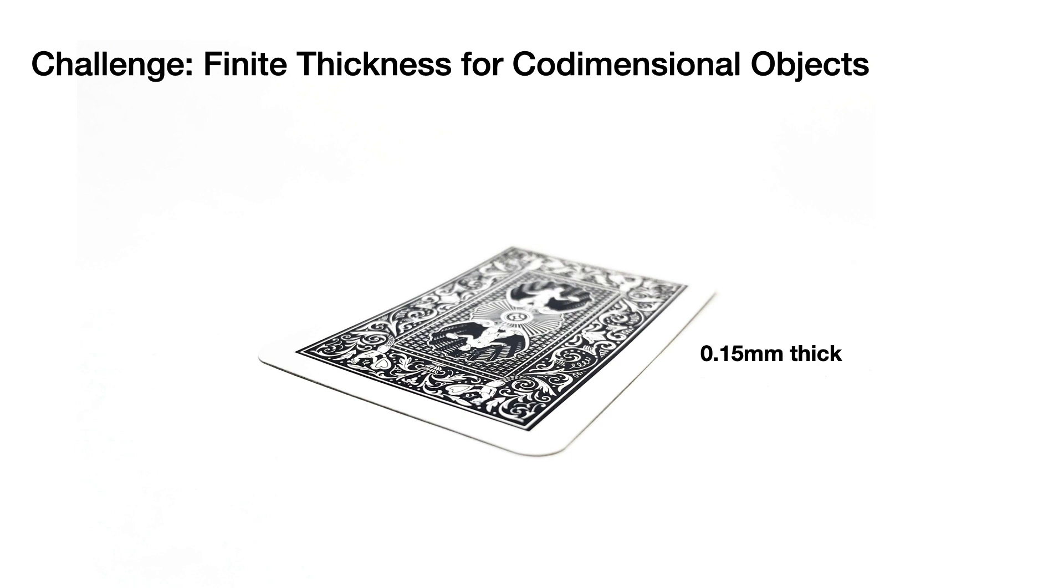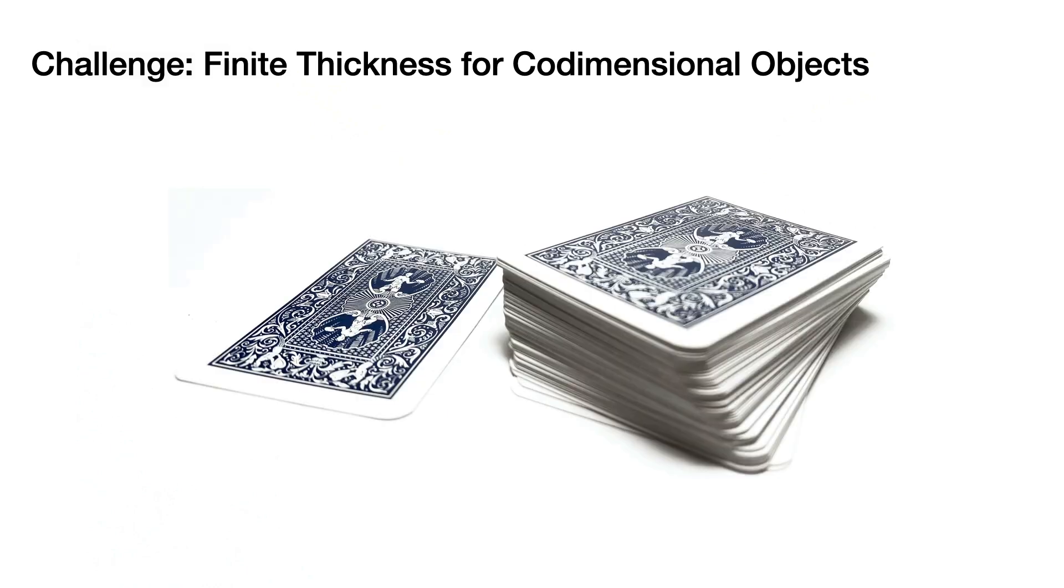Let's take a look at thickness. Simulating the behavior of a single shell like this card can be done with a standard codimensional model without requiring modeling its geometric thickness. But when stacked together, these thicknesses add up and we need to accurately model them.